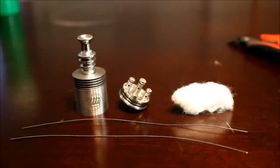So, these are basically what you're going to need. You're going to need an atomizer, some cotton, and I've got two pieces of 26 gauge wire cut out ready to go.